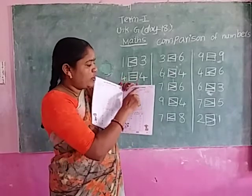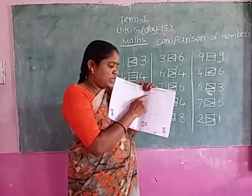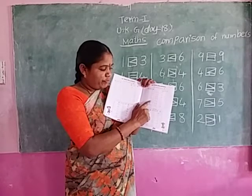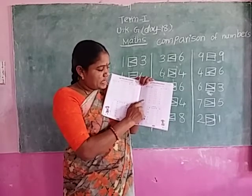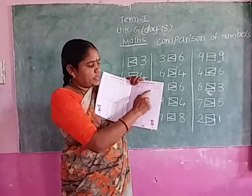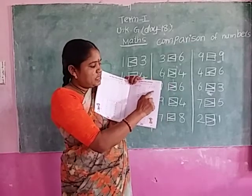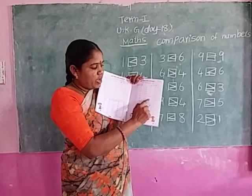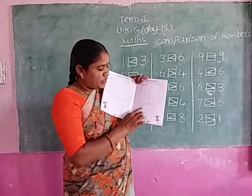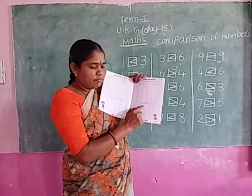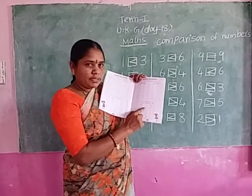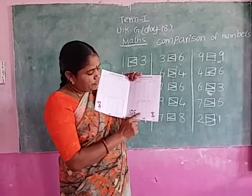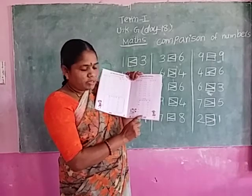Before, after, between numbers. Before 3 is 2, before 12 is 11, before 17 is 16, before 6 is 5, before 14 is 13, before 18 is 17, before 10 is 9. After 5 is 6, after 8 is 9, after 16 is 17, after 11 is 12, after 4 is 5, after 2 is 3, after 18 is 19. Between: 14 and 16 is 15, 18 and 20 is 19, 1 and 3 is 2, 4 and 6 is 5, 6 and 8 is 7, 15 and 17 is 16.